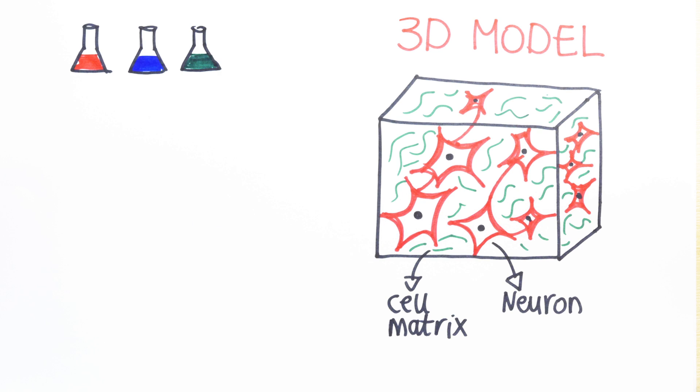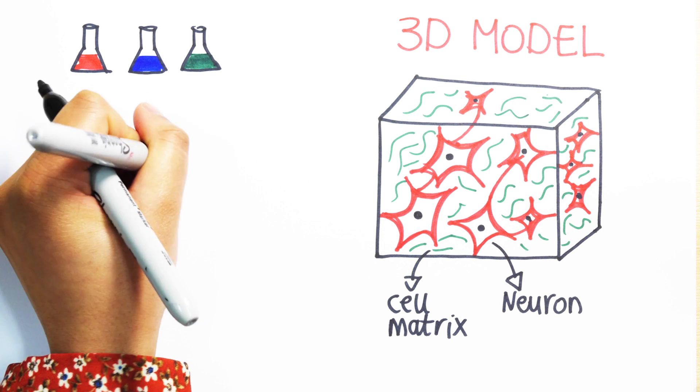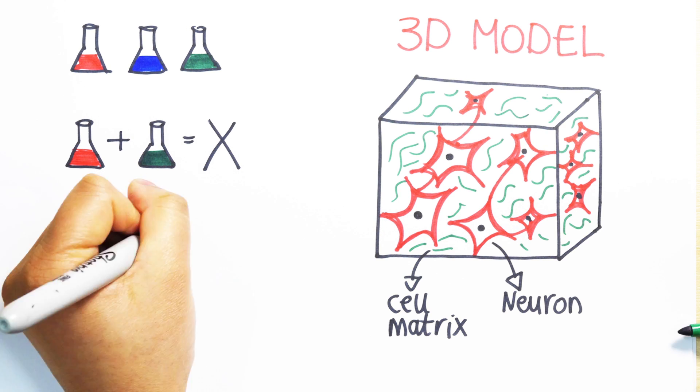My PhD aims to discover the best method for creating a 3D cell matrix structure. This includes finding the best mix of chemicals to surround the cells to support the 3D arrangement.